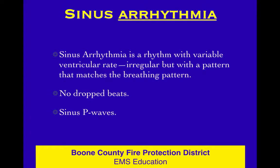Sinus arrhythmia is a particular rhythm that has a variable ventricular rate. It is irregular and there's a pattern to it, but you can't really tell it's sinus arrhythmia unless you can watch the patient breathe. As the patient takes in a deep breath, intrathoracic pressure increases, there's some pressure on the vagus nerve, and the rate slows a little bit. As they exhale, that vagal stimulation is removed and the rate comes back up. So the rate changes based on their breathing pattern — this is normal, it's no big deal.